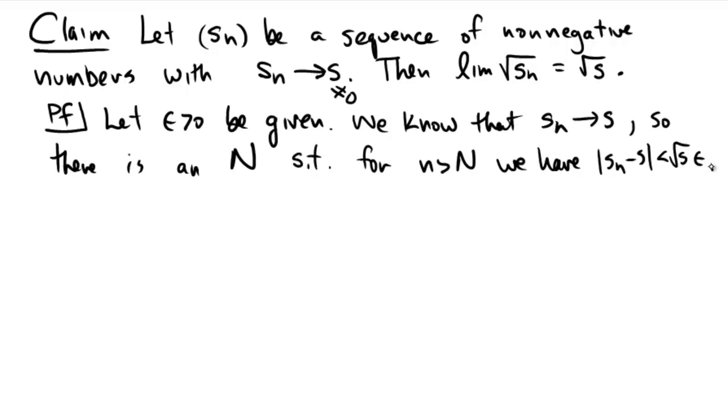we have Sn minus S can be made less than radical S times epsilon. So what is that going to give us now? Thus, for n bigger than capital N, what do we have is true about the absolute value of radical Sn minus radical S? We hope we can make that less than epsilon.